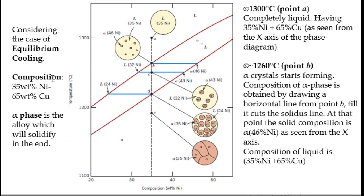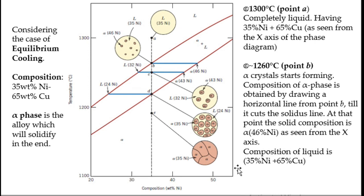We are considering equilibrium cooling. The composition chosen is 35 weight percent nickel. This is a solid solution—copper-nickel—where copper is in majority and nickel is in minority.